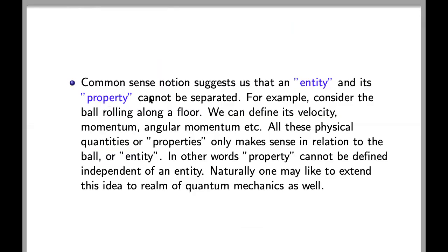Common sense notion suggests that an entity and its property cannot be separated. For example, consider the ball rolling along a floor. We can define its velocity, momentum, angular momentum, etc. All these physical quantities or properties only make sense in relation to the ball or entity. In other words, property cannot be defined independent of an entity. Naturally, one may like to extend this idea to realm of quantum mechanics as well.